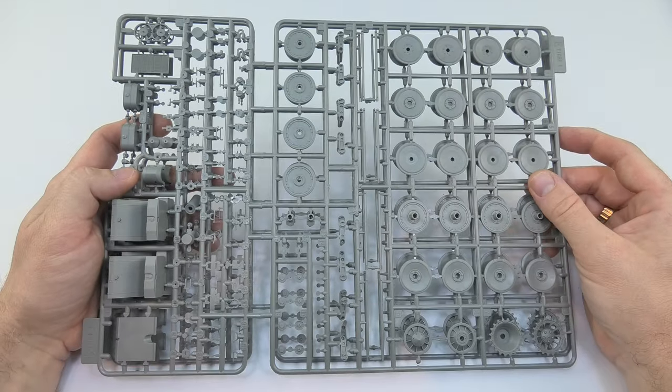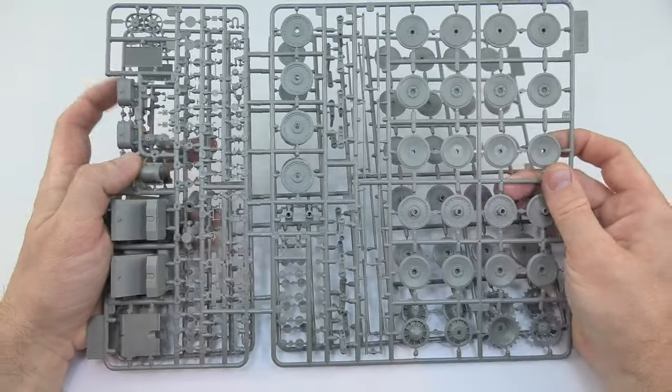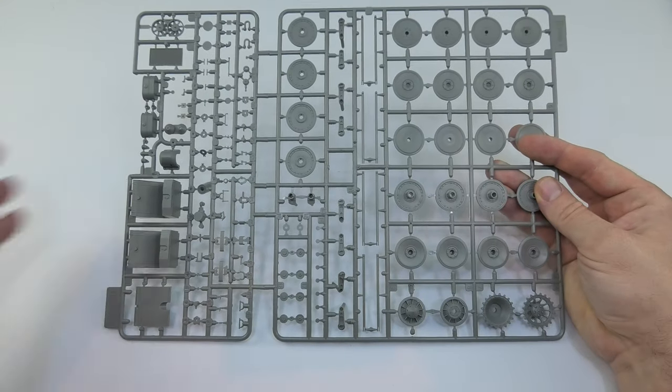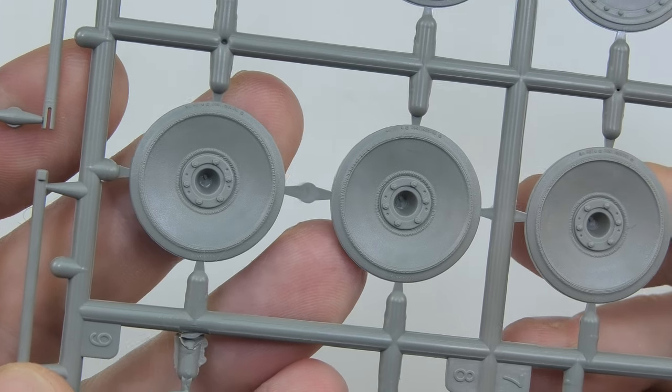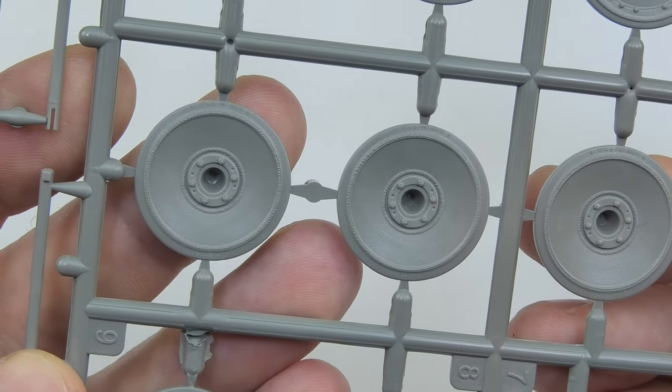Two frames with wheels and parts of the engine compartment. Let's look at the wheels. They look surprisingly good with weld lines and bolts. We have very delicate manufacturer's inscription on the rubber rims which will probably disappear under the layer of paint and mud in later stages.